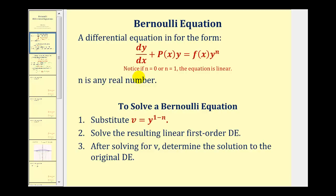We're looking at values of n that are greater than one. If we recognize that a differential equation fits this form, then to solve the Bernoulli equation, we're going to perform a substitution, which will be v equals y raised to the power of one minus n. After performing this substitution, we'll solve the resulting linear first order differential equation. Then after we solve for v, we can determine the solution to the original differential equation by solving for y.